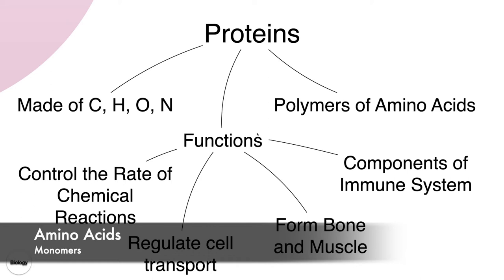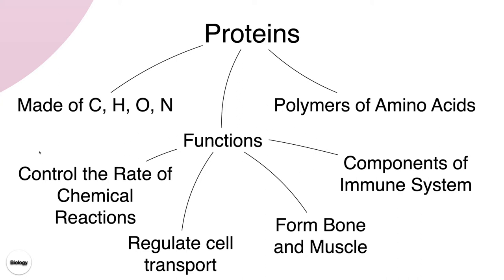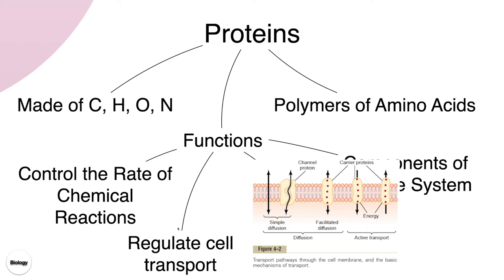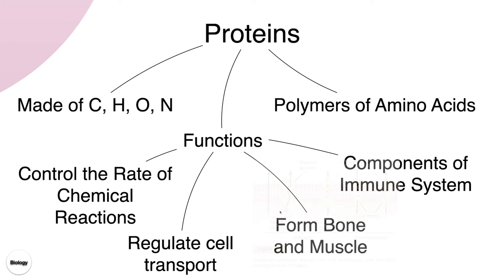Proteins are polymers and they are made up of monomers called amino acids. Proteins have many different functions: they control the rate of chemical reactions — those are enzymes, and we'll have a separate lecture on those. They're also used to regulate cell transport, so we have transport proteins that move materials in and out. They can also be used to form bone and muscle, and they are found as components of the immune system, such as antibodies.